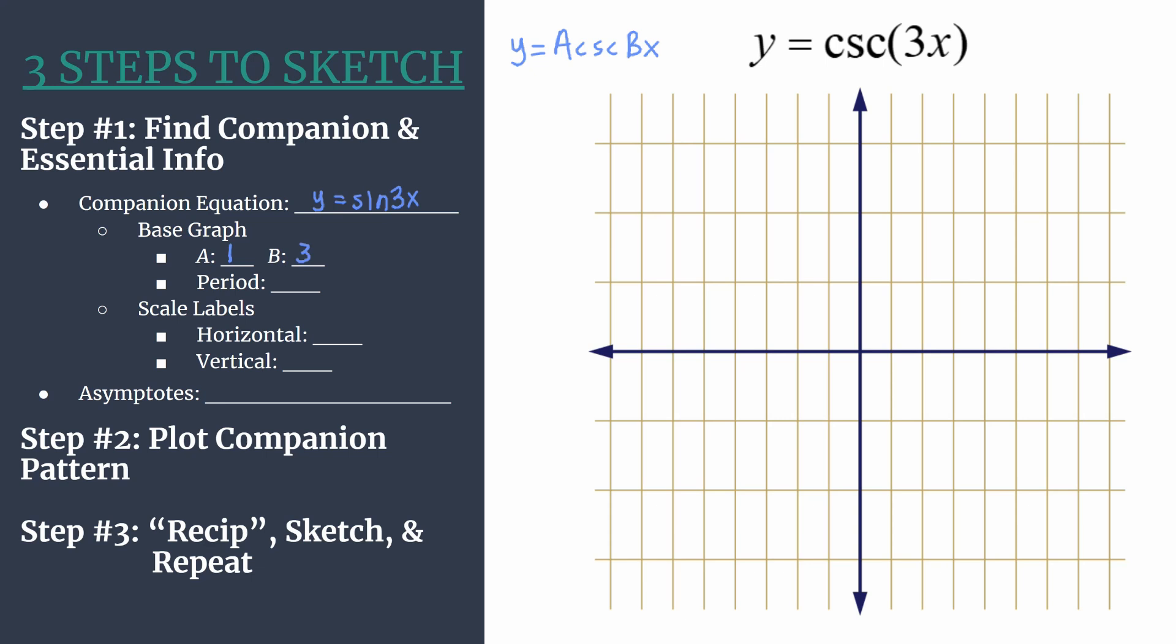We'll have three cycles that happen between 0 and 2 pi. We can use b to find the period, calculated as 2 pi divided by b. In this case it'll be 2 pi divided by 3 for the period, and that's the length of a horizontal cycle.